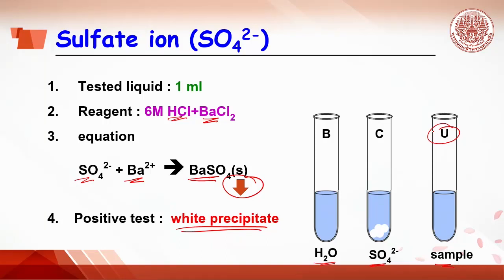If no precipitate, it is negative, means that no sulfate ion in the sample. Keep in mind, the amount of precipitation might not equal due to the difference in concentration of sulfate ion.